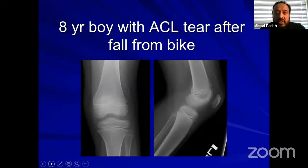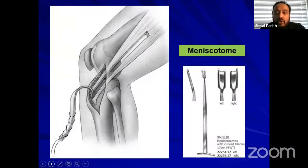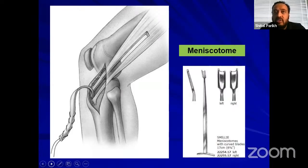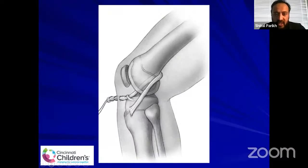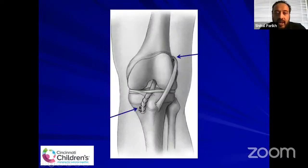Here is an example of an eight-year-old boy with an ACL tear after a fall from a bike. For this patient, I use the iliotibial band technique. You harvest the iliotibial band — some ACL sets come with a meniscotome, or you can use long scissors and slide it up. You need about 20 centimeters of graft, make a counter incision proximally, cut the ITB, and leave it attached at its insertion over the Gerdy's tubercle. Then put a clamp in the knee joint, pull the graft in, and it goes underneath the intrameniscal ligament, then fix it to the periosteum over the anteromedial aspect of the tibia.